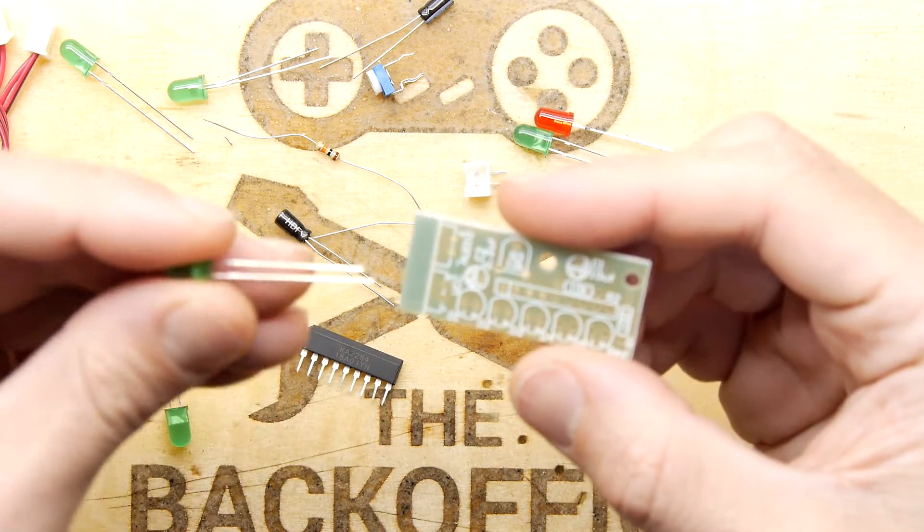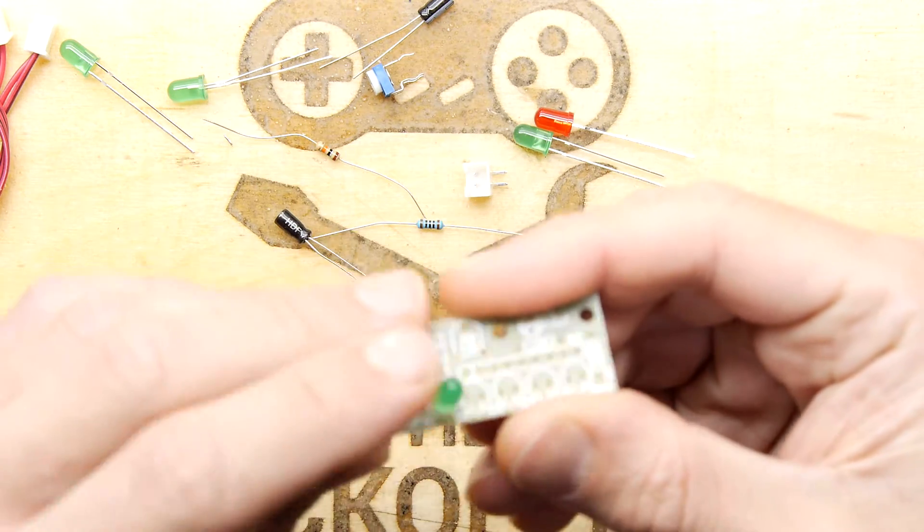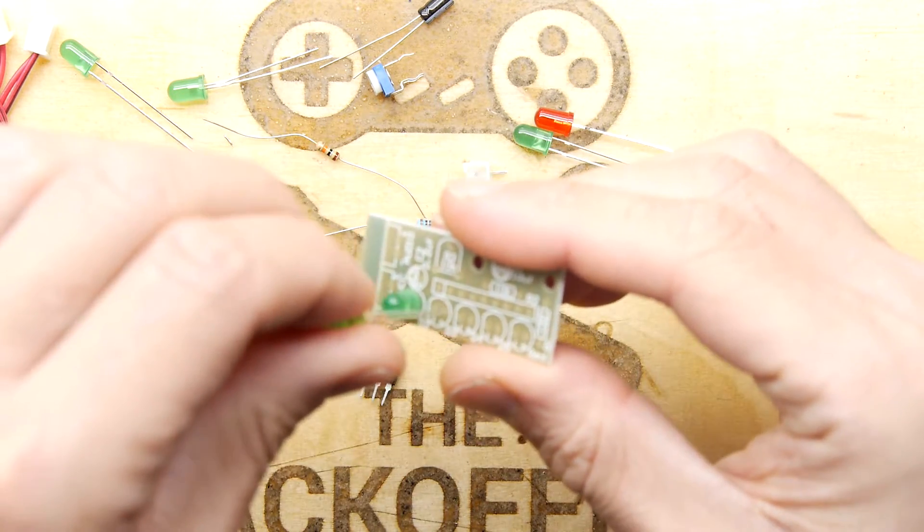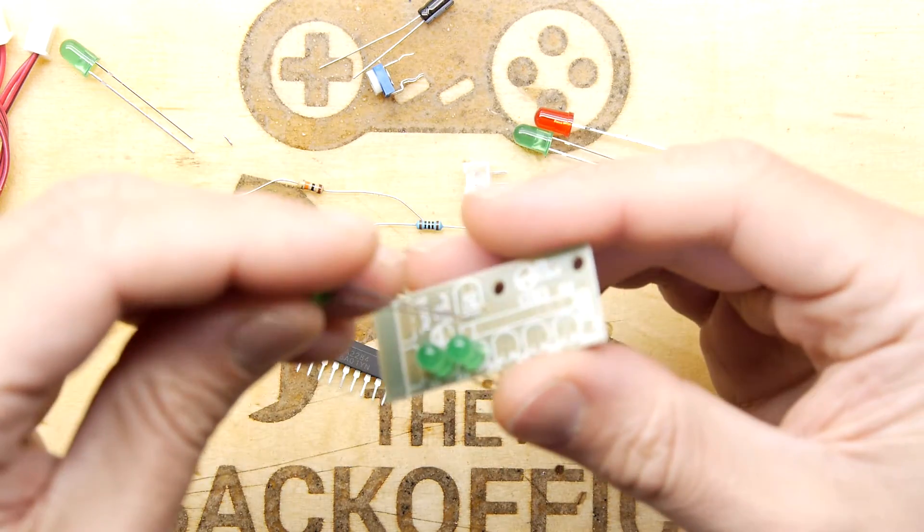But everything else looks pretty simple. The LEDs are nicely marked and they've actually got the polarity written on them. Remember long leg positive. So we're just going to pop those in. This looks rather simple. This could be a very quick build.